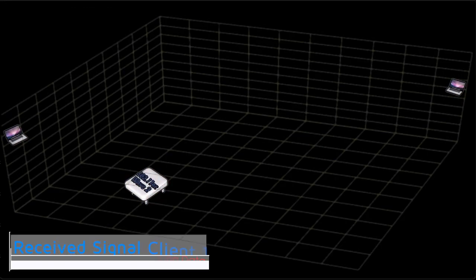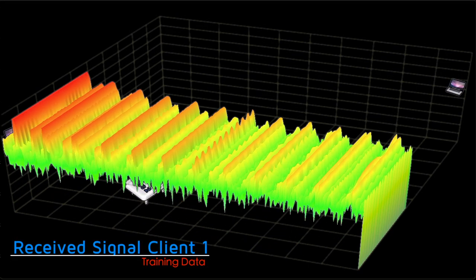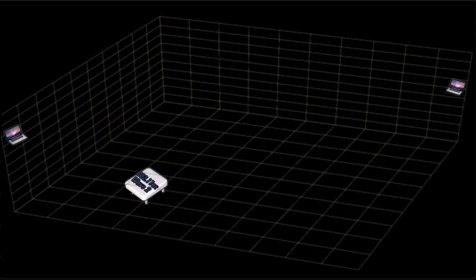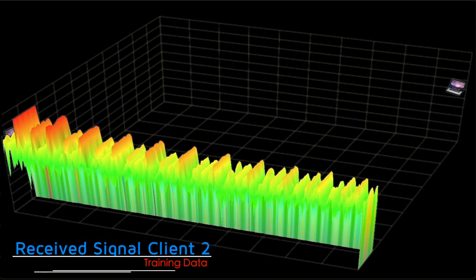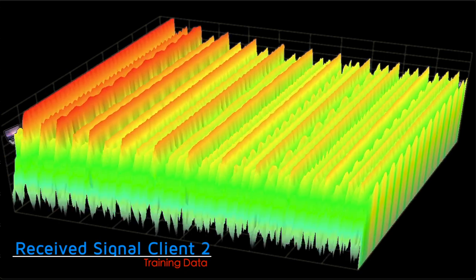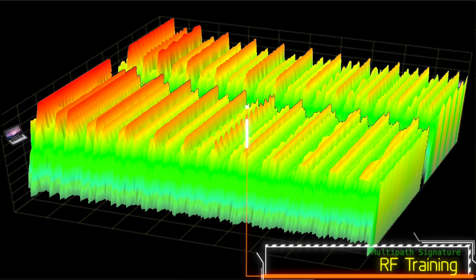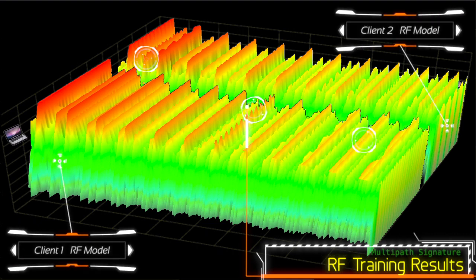First, let's look at the received RF pattern from client 1's location. Now let's look at that same pattern received from client 2's location. With the two signals side by side, we can easily see the changes made by the environment.